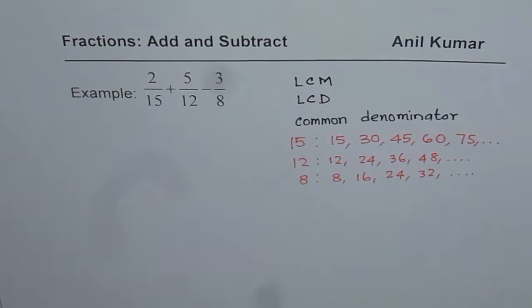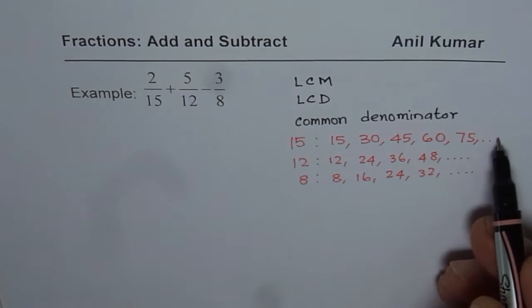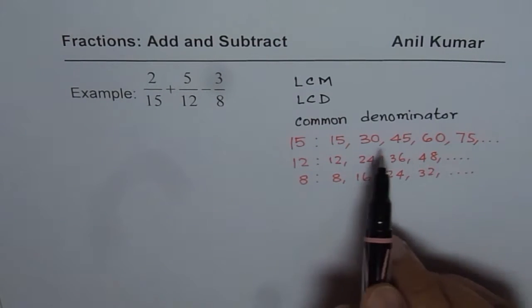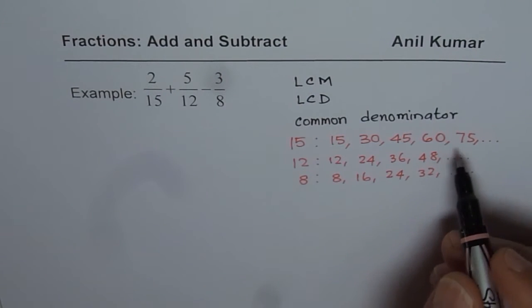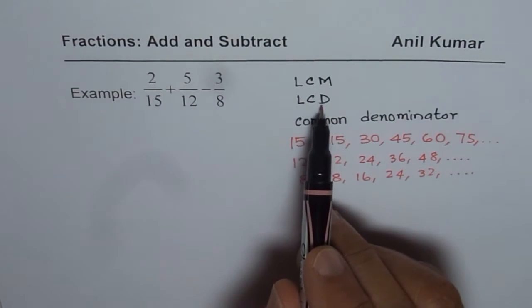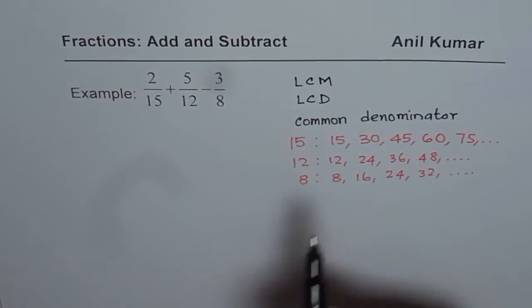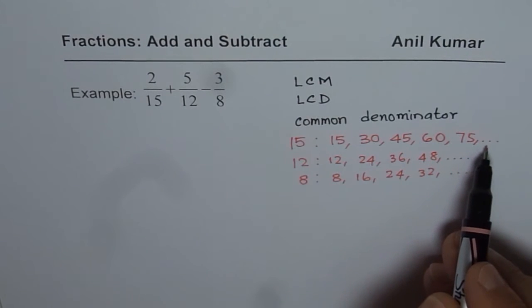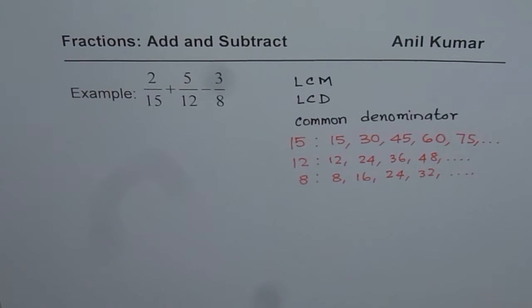We will actually end up definitely with a common multiple. So you can continue this list and whichever you find common will be your least common multiple and that can be treated as the least common denominator. You can see very easily that sometimes the list could be very long, takes time.